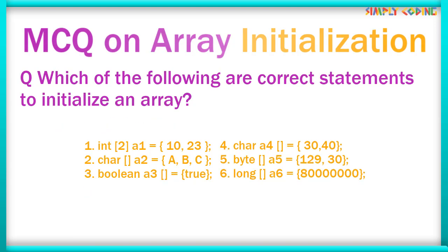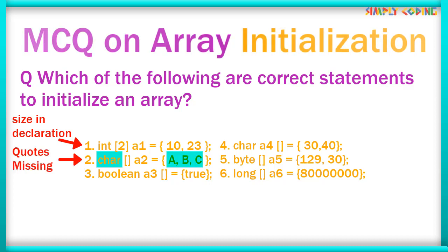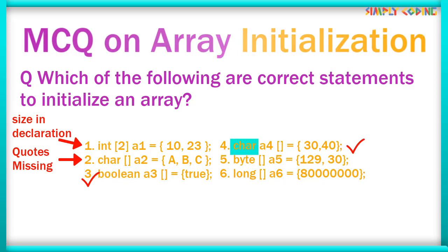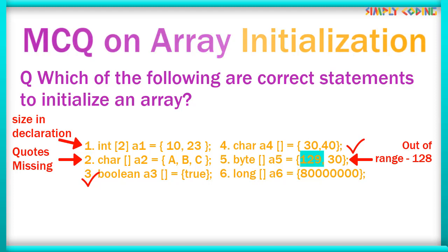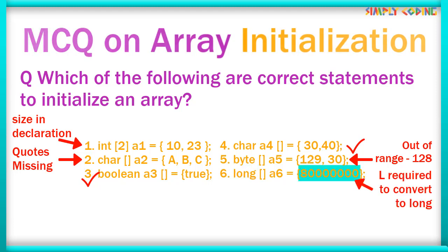Now we will see some questions around initialization. Which of the following is a correct statement to initialize an array? The first one is incorrect as you do not give the size in the declaration. The next one is char but quotes are missing around each character. The next one is a valid boolean array. Can char have numbers? Yes, it can. The next is a byte array — will it give any error? Yes, byte only allows numbers up to 128, so it will give a lossy conversion from int to byte. The last is a long array — numeric literals are by default int, and the size is beyond int. For long literals, you specify 'L' in front of the value to make it work.